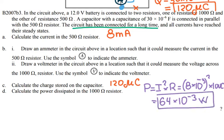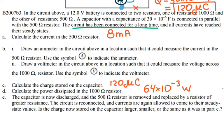For part E, the capacitor is now discharged and the 500-ohm resistor is removed and replaced with a resistor of greater resistance. The circuit is reconnected and currents are again allowed to come to their steady-state values. The question is: is the charge now stored on the capacitor larger, smaller, or the same as it was in part C?